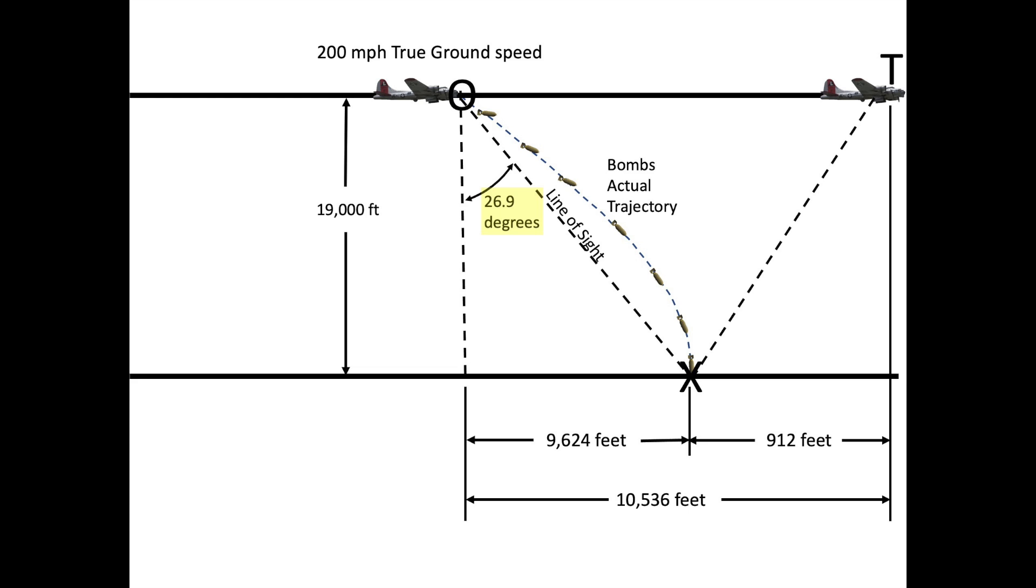The bomb will be released at the moment the bomb site's line of sight is angled 26.9 degrees from the vertical. It is critical the Norton bomb site's gyros are stabilized in the vertical plane so that this angle can be precisely measured.